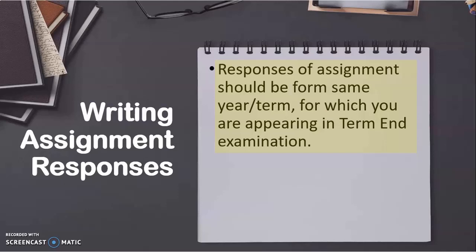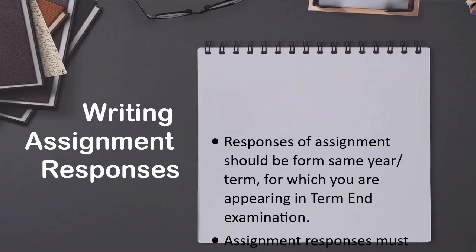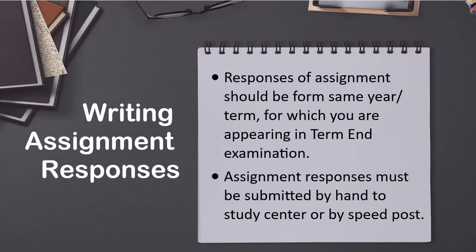For example, if you have taken admission in the 2019 batch and have not submitted the assignment at that time, but now want to appear in the term-end examination of 2020 for the first year, then you need to submit the assignments which are for the 2020 batch, not the assignments which were for your original 2019 batch. Assignment responses must be submitted by hand at your study center or by speed post, but you can also utilize technology if your study center or RC permits.